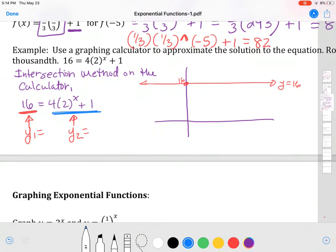And when I do my blue function on the right-hand side, my exponential function, the four times two to the x plus one, I'm going to get something that looks like this. This is my four times two to the x and then plus one.